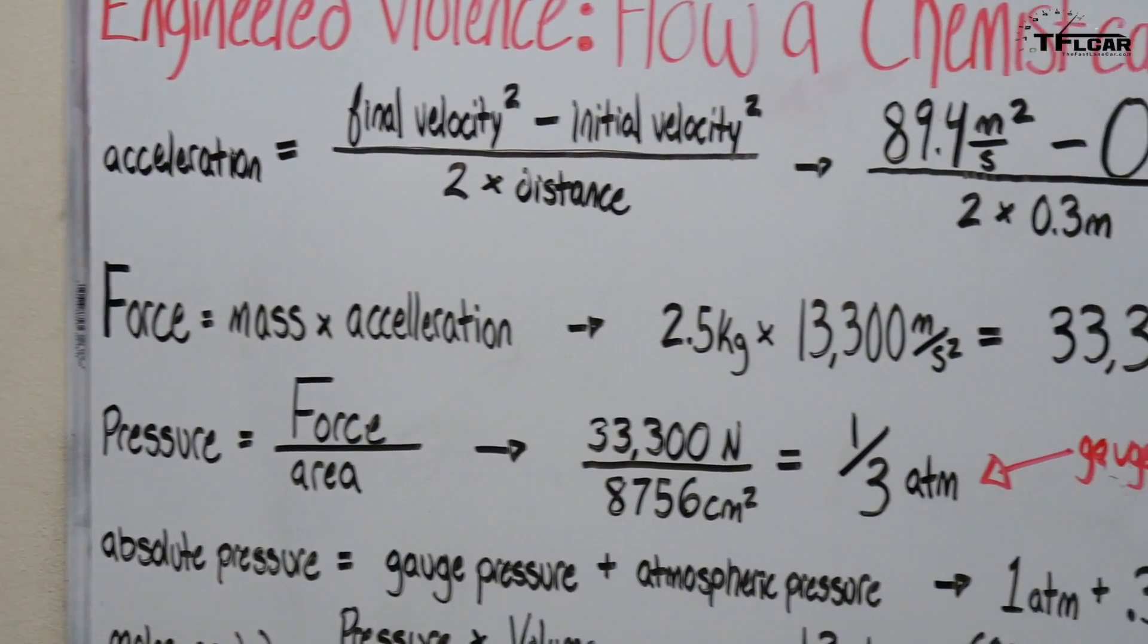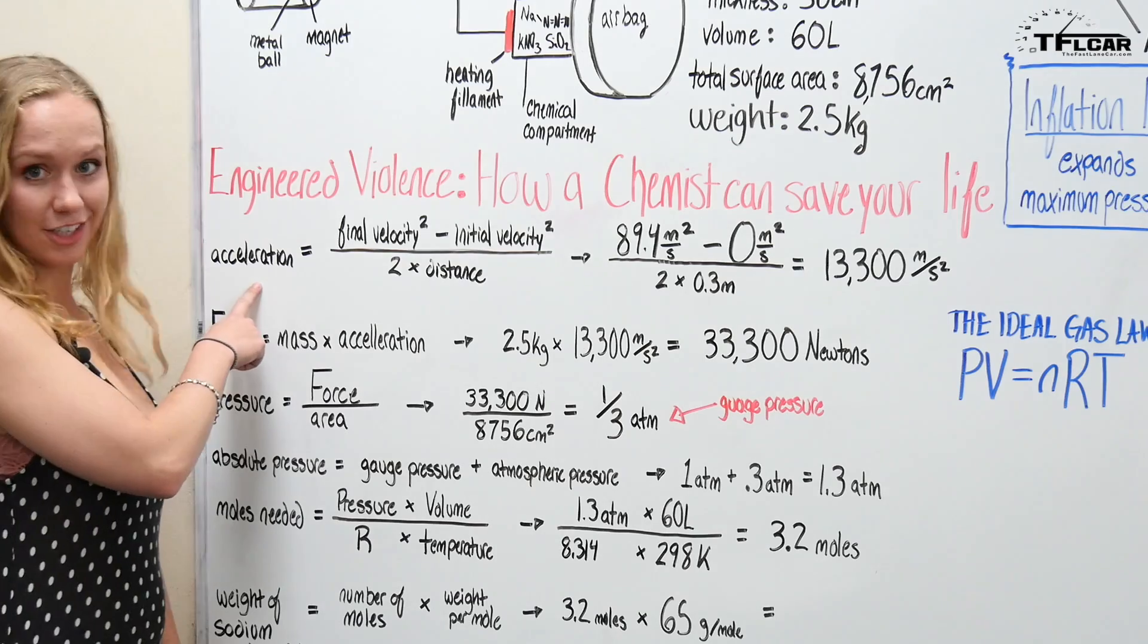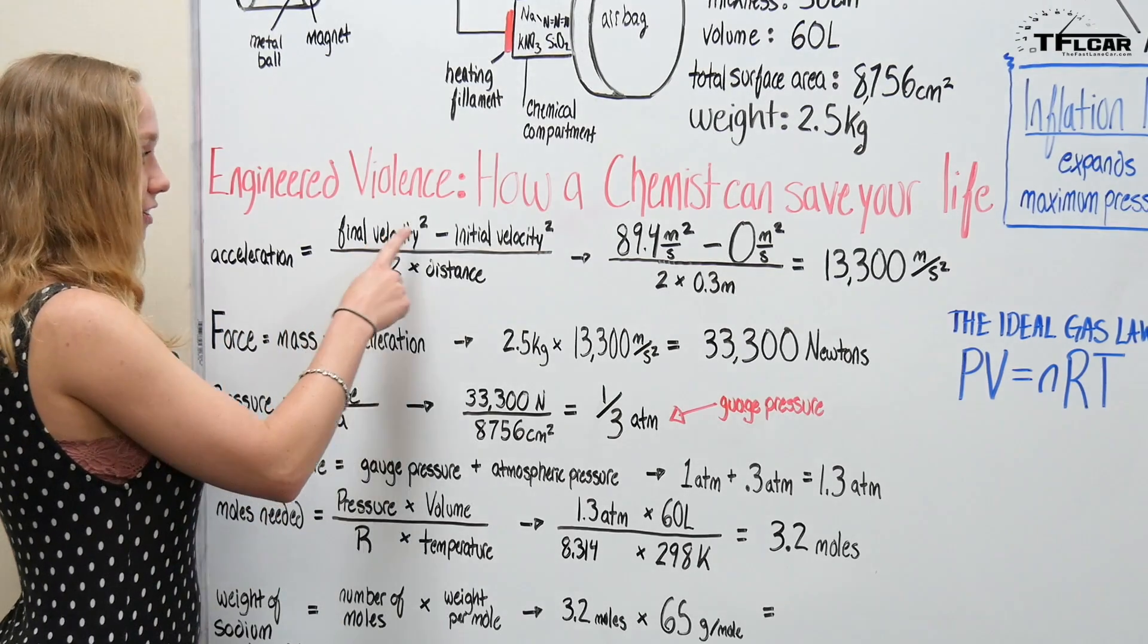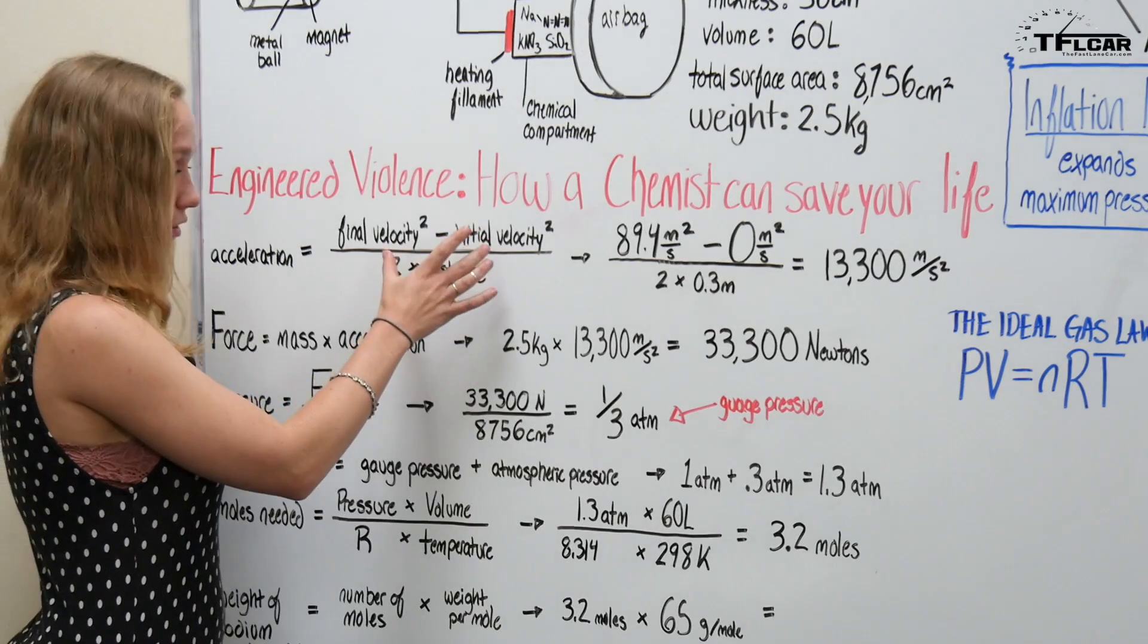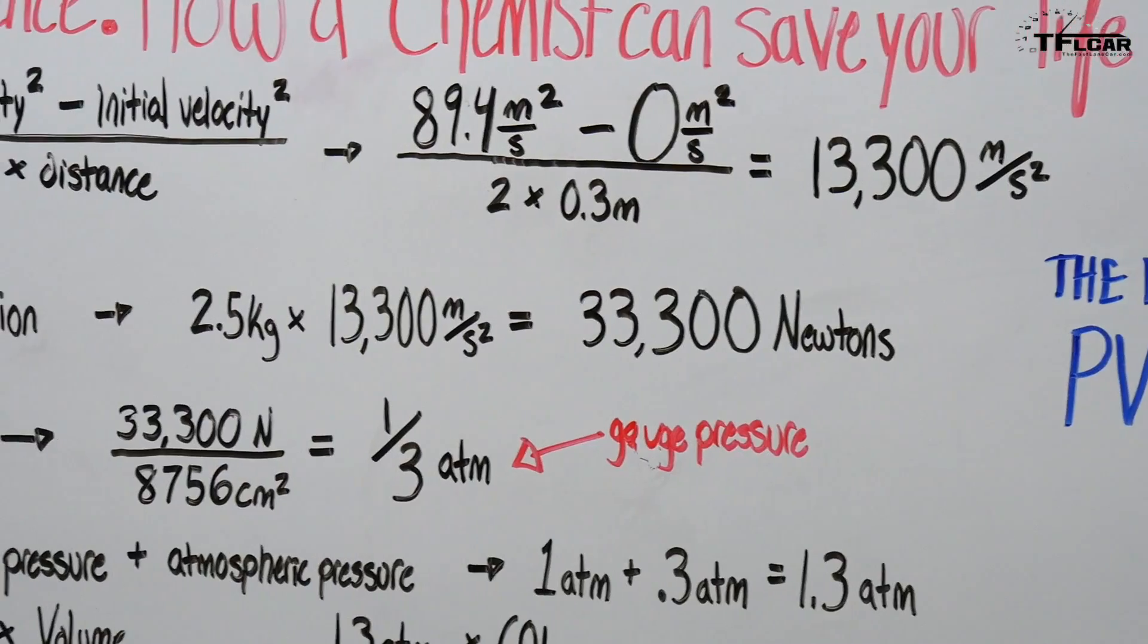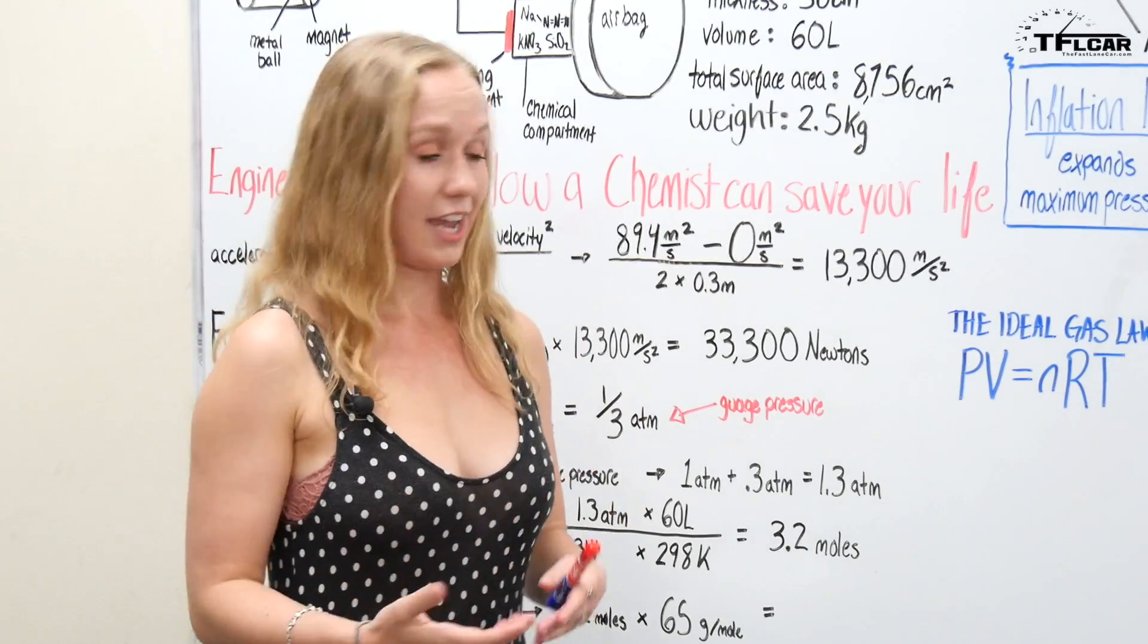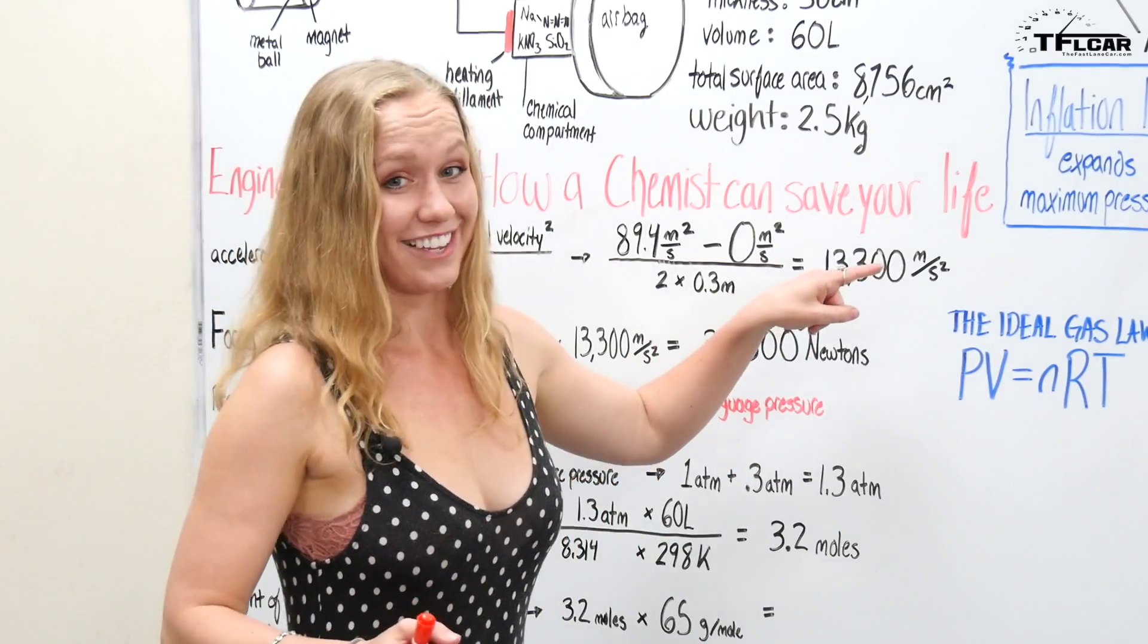To find that acceleration what you're going to use is just a very simple equation. Acceleration equals final velocity minus initial velocity both of those are squared divided by two times the distance that you need it to travel. 13,300 meters per second squared and that's basically just saying that's extremely fast.